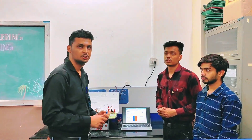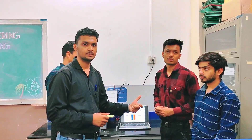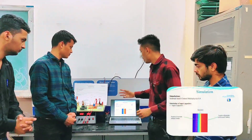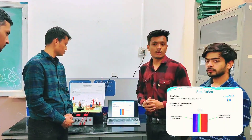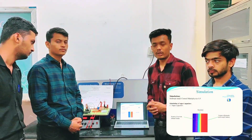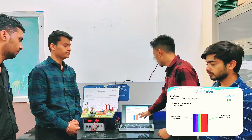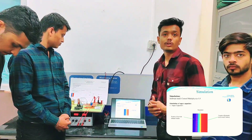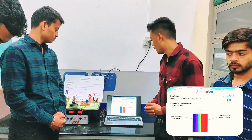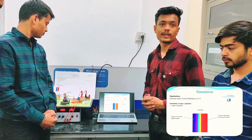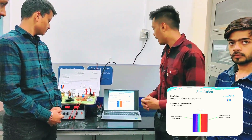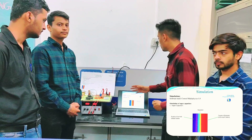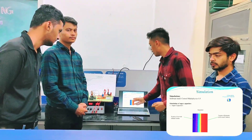In the software methodology, we move towards simulation. We have done the simulation on console software. This is the asymmetrical capacitor. On the anode side, we use metal oxide, and on the cathode side, we use activated carbon. As a separator, we use polythene.